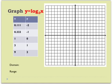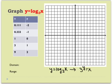I've rewritten y equals log base 3 of x in exponential form: 3 to the y equals x. Now I plug in values for y to find the x coordinates. 3 to the negative 2 gives me 1 ninth; 3 to the negative 1 is 1 third; 3 to the zero power is always 1; 3 to the first is 3; and 3 to the second is 9. So now I have my coordinates — let's go ahead and graph.